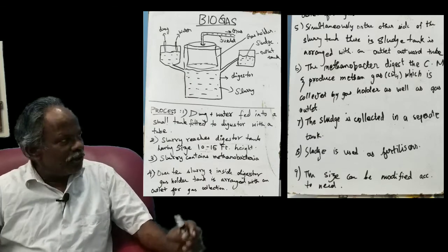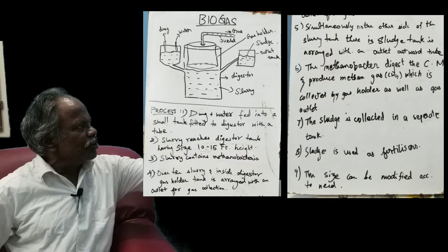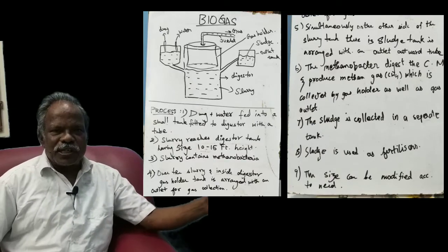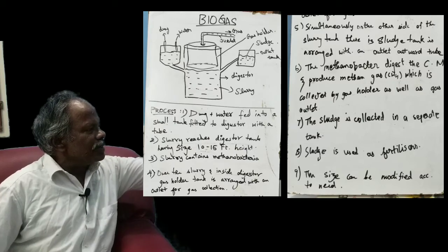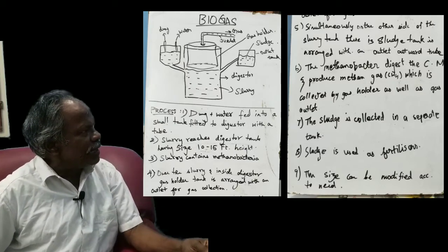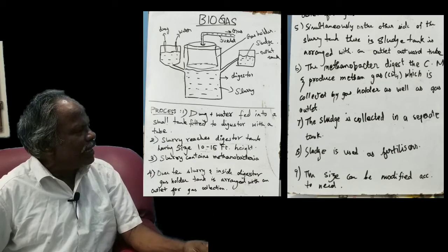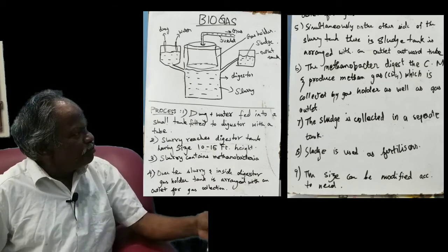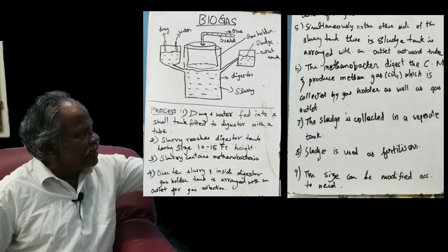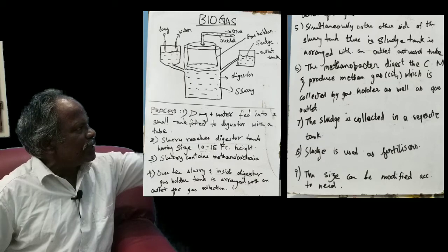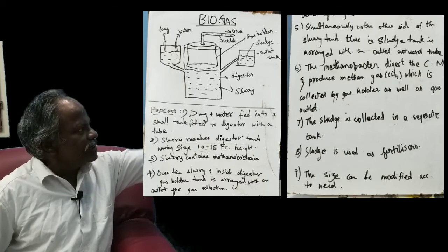Now we are going to see how the biogas is actually produced. For the purpose of producing biogas, we are constructing a steel tank with the height of 15 feet. The digester tank is connected to another tank.